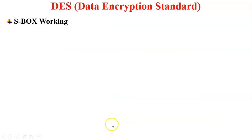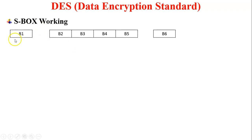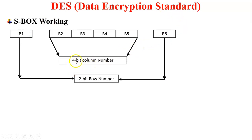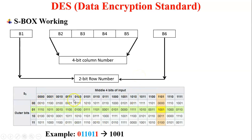The working of S-Box: 6 bits convert into 4 bits. In one block there are 6 bits — B1, B2, B3, B4, B5, and B6 — where B2 to B5 are the middle bits and B1 and B6 are the outer bits. The 4 middle bits determine the column number and the 2 outer bits determine the row number. For example, if the 6-bit input is 0,1,1,0,1,1 — middle bits 1,1,0,1 give the column and outer bits 0,1 give the row — and it generates output 1,0,0,1. So 6 bits convert into 4 bits. This is the working of S-Box.